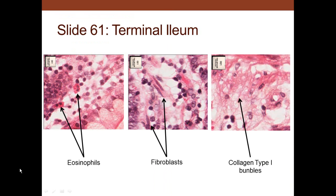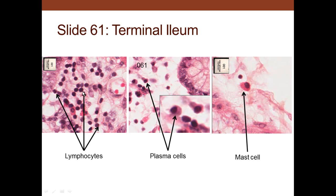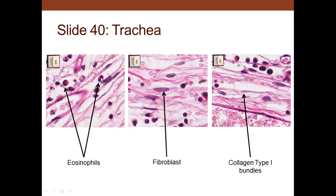Looking at the ileum, we can identify eosinophils with a lobulated nucleus and many eosinophilic granules. Fibroblasts have cigar-shaped nuclei and a little cytoplasm. Surrounding these cells we see type 1 collagen bundles that vary in size. Lymphocytes are also present, as well as plasma cells with a spherical nucleus and abundant cytoplasm. Mast cells have an intact, non-lobulated nucleus with large granules.